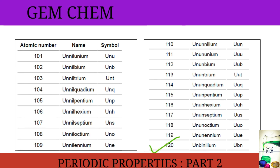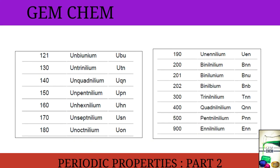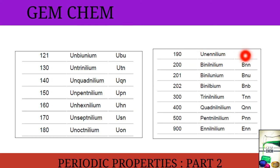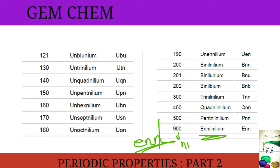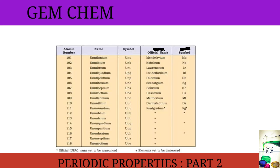For 121 it is un-un-bium, symbol Uub. For 190 it is un-en-nilium, symbol Uen. For 900, it would be en-nil-nilium — here the 9 is written as 'en', so one 'n' is ignored since nil contains an 'n' already.